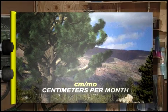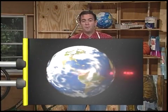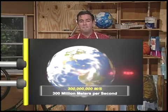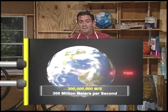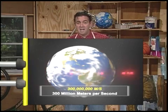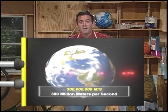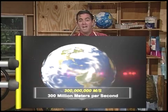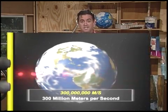On the opposite end, some things move very quickly, like light. Light moves at a speed of almost 300 million meters per second — that's around 186,000 miles per second. It's like going around the Earth eight times in a single second.